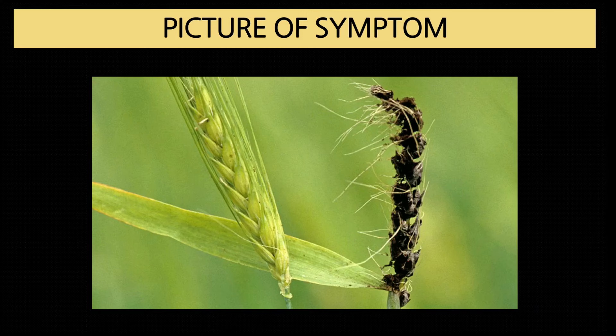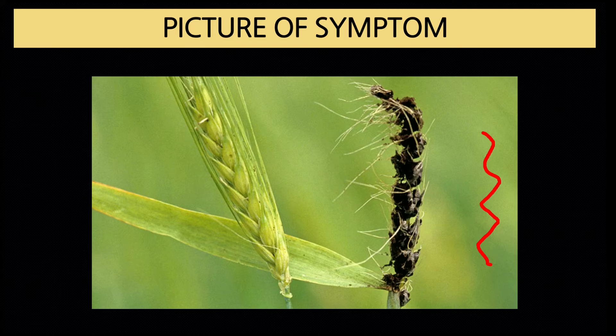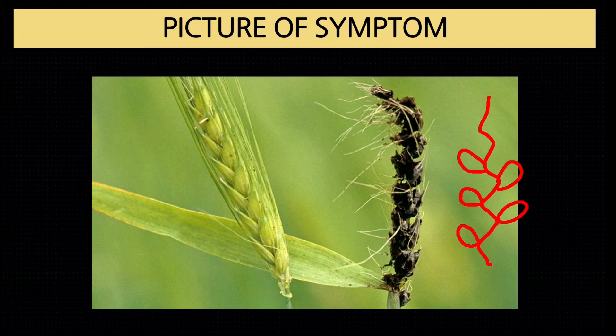When the papery membrane ruptures, only the rachis remains visible. The difference between smut and bunt: in smut the entire grain converts to black powder mass, while in bunt only a portion converts to black powder. Rachis is the portion of the stem on which grains are attached.